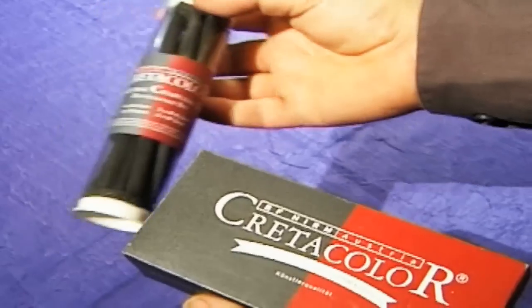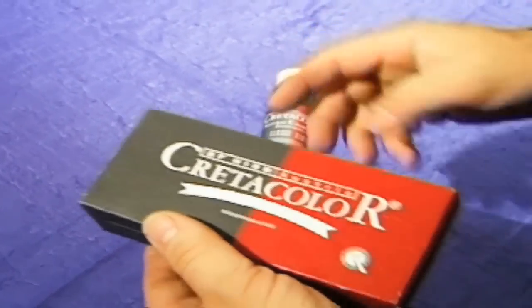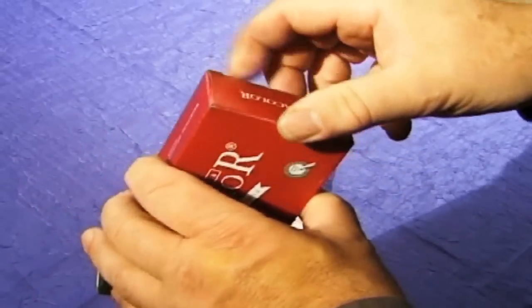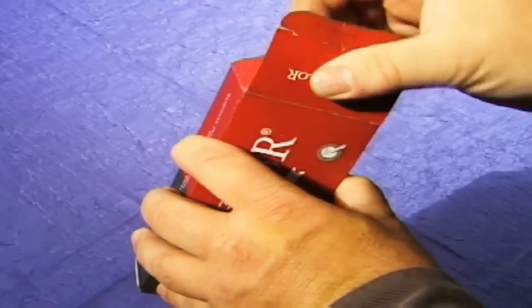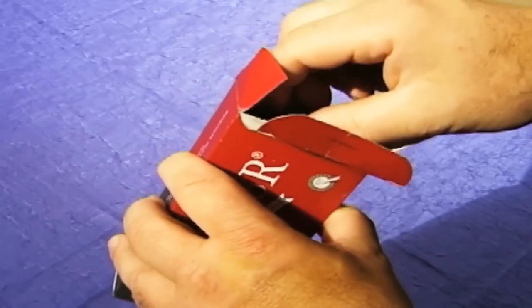The natural charcoal from Cretacolor does not, however, originate from the time of the dinosaurs, but consists of natural and as resin-free a wood as possible, which is heated and charred using an airtight process.